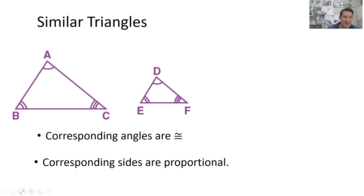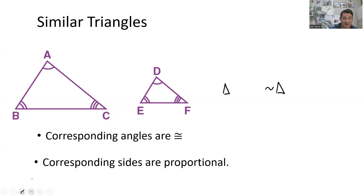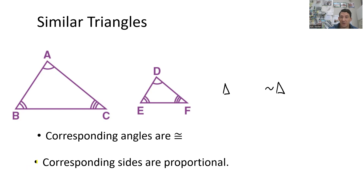What we need to talk about is the similarity statement. So what we want to do when we're talking about similar triangles, the similarity statements can be very important. This symbol means similar - it's like the wavy part of the congruent symbol. It means they're not equal, but they're mini-me's. What we want to do when we list out the vertices of these triangles, we want to make sure we list them so that the vertices are in corresponding order.